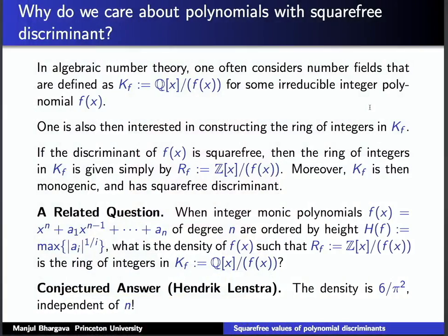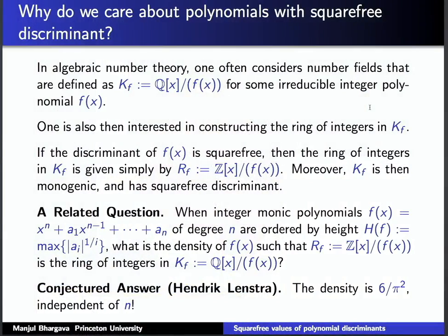The conjectured answer, due to Hendrik Lenzstra, is that the density of f(x) for which ℤ[x]/(f(x)) is the ring of integers in ℚ[x]/(f(x)) is 6/π², independent of the degree n. So if you pick a random degree n polynomial, the probability should be 6/π² that the naive way of constructing the ring of integers will work — that's about 60%, better than 50-50. Previously, it wasn't even known that a positive proportion had that property.